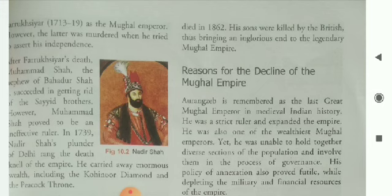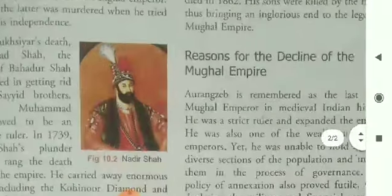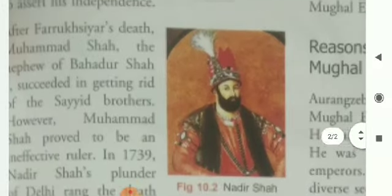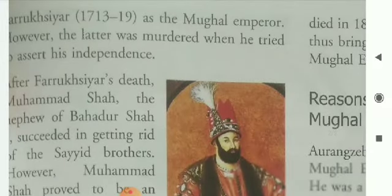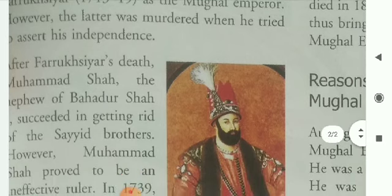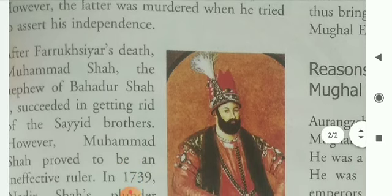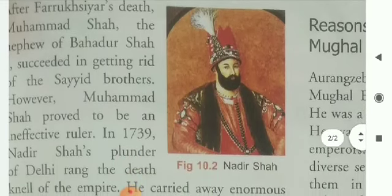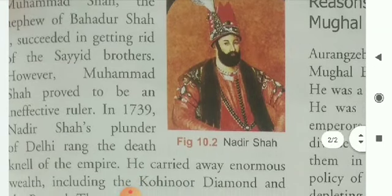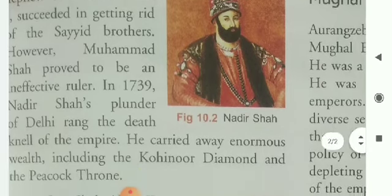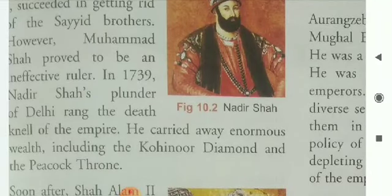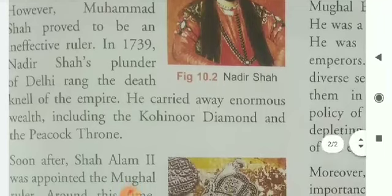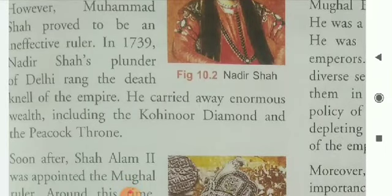The Mughal emperor tried to assert his independence. However, he was murdered when he tried to do so. After Farrukhsiyar's death, Muhammad Shah, the nephew of Bahadur Shah, succeeded in getting rid of the Sayyid brothers. However, Muhammad Shah proved to be an ineffective ruler.